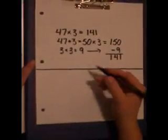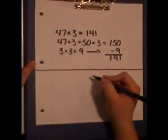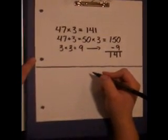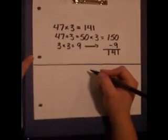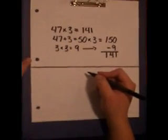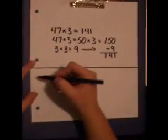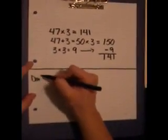Another way to manipulate numbers to make a problem easier using a compensation strategy is by dividing one factor by 2 and multiplying the other factor by 2, or the double half strategy.